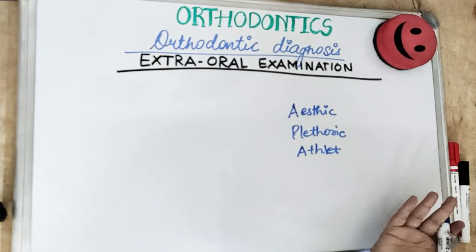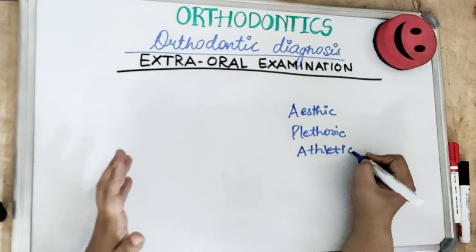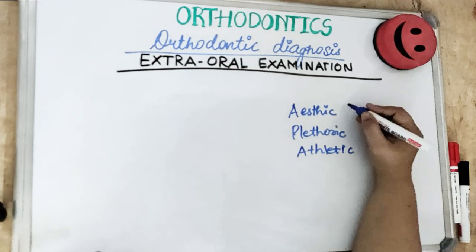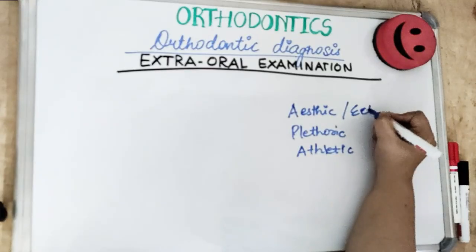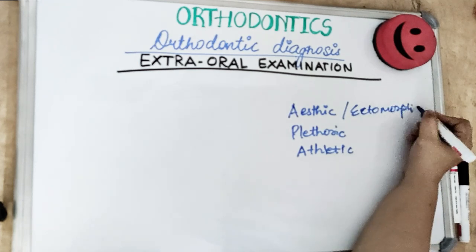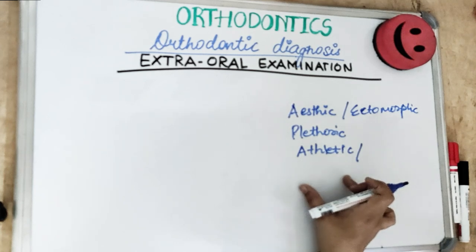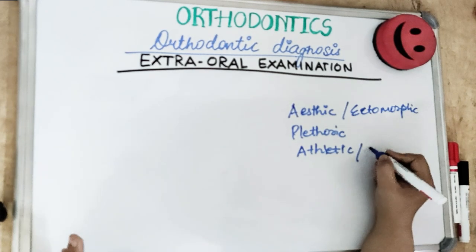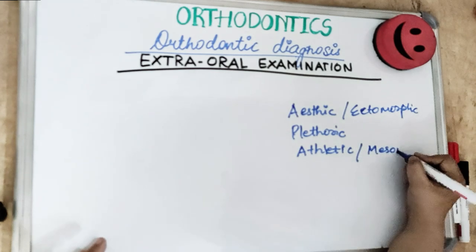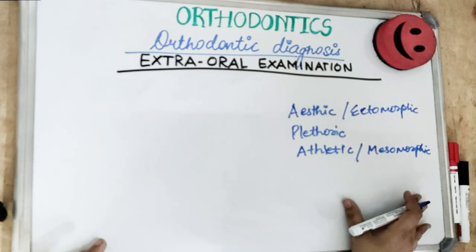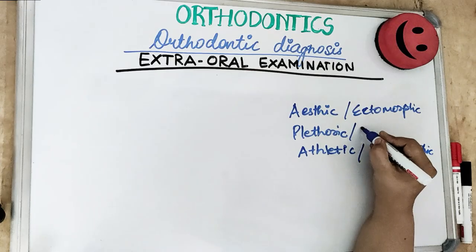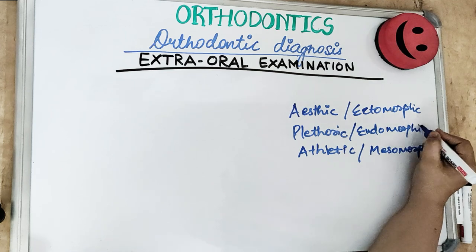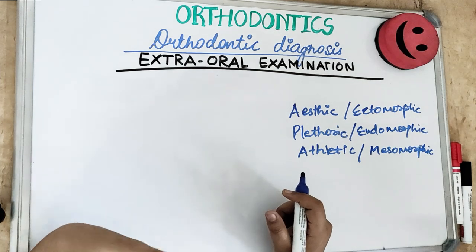The third build is the athletic physique, considered a normal build — not thin, not obese — with normal-sized dental arches. Sheldon divided the body physique into three types: ectomorphic (thin and tall figure), mesomorphic (similar to athletic physique — neither thin nor obese, with normal dental arches), and endomorphic (short and obese physique). This morphic classification is given by Sheldon. We determine the general assessment of a patient by general examination as soon as the patient enters the clinic.